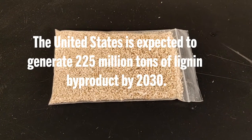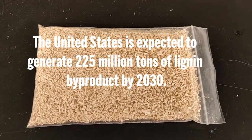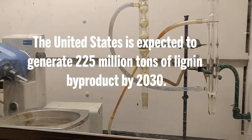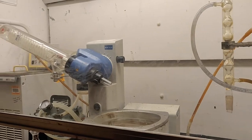The United States is expected to produce about 225 million tons of lignin by-product by 2030. Lignin is an essential component of lignocellulose biomass but is very difficult to convert into useful phenolic monomers. My research involves modifying the structure of lignin in such a way as to make its transformation easier.